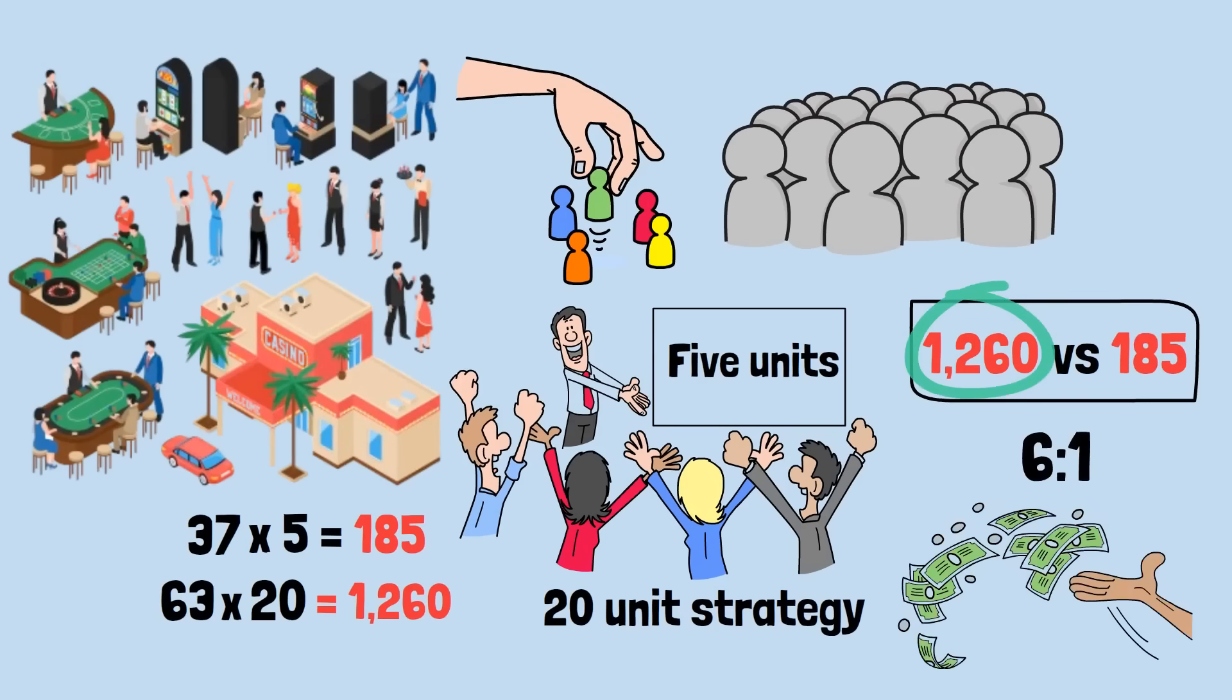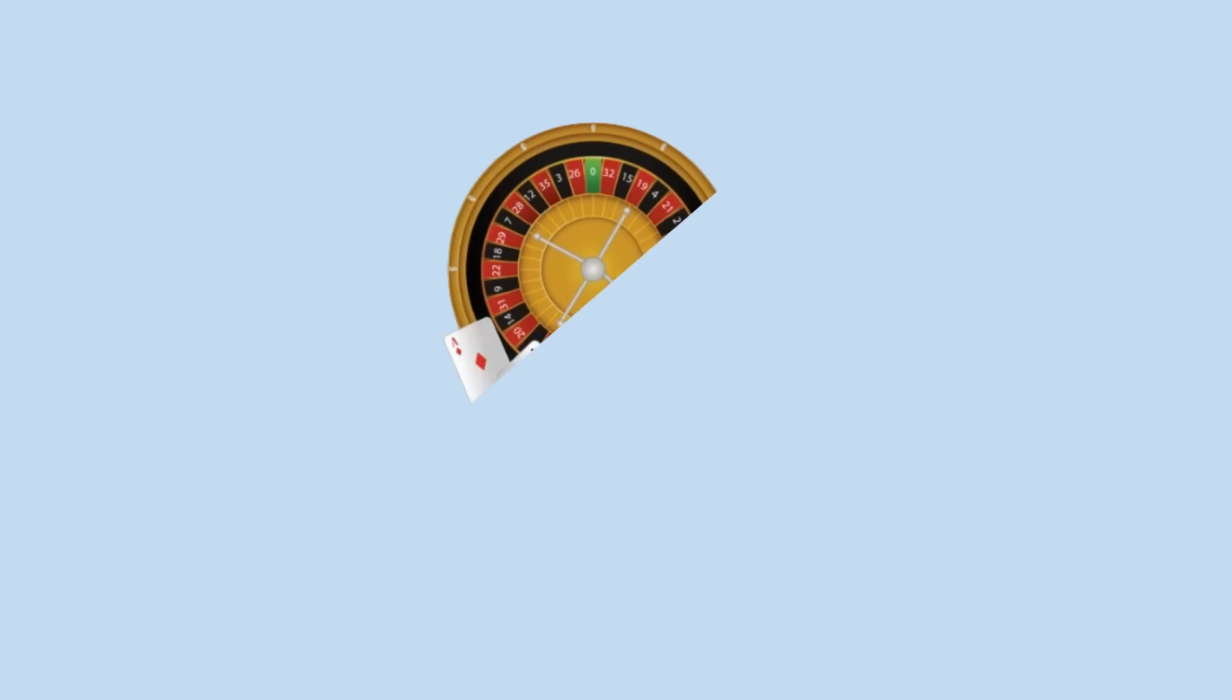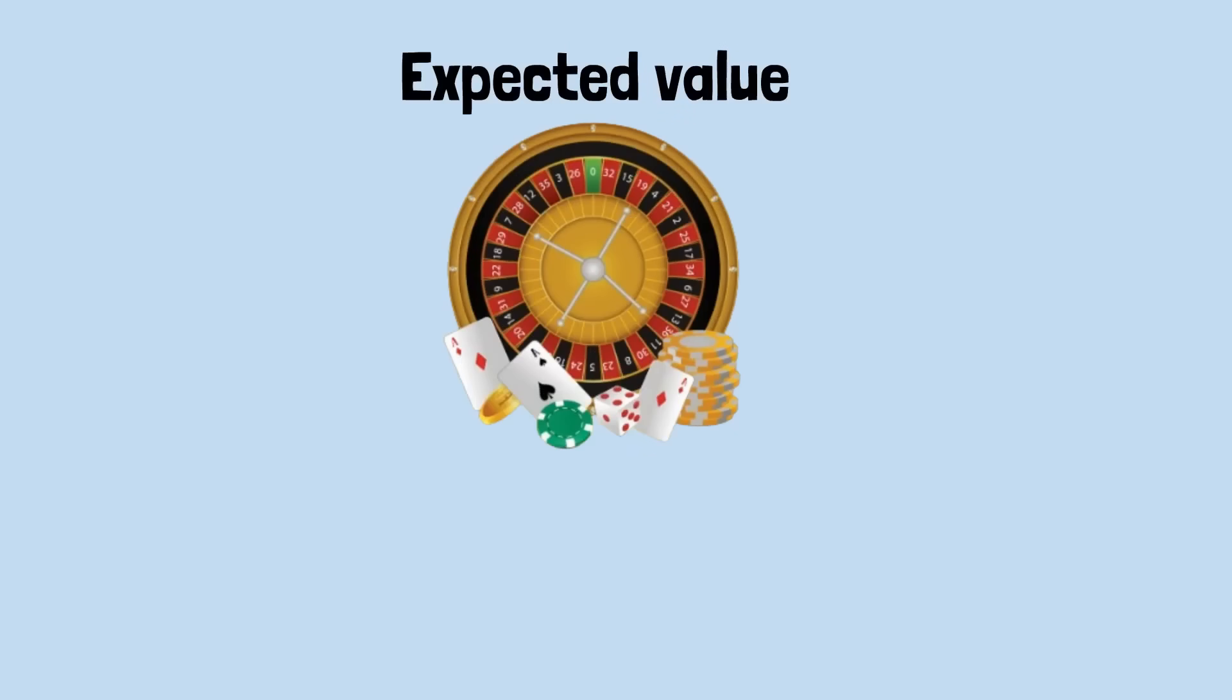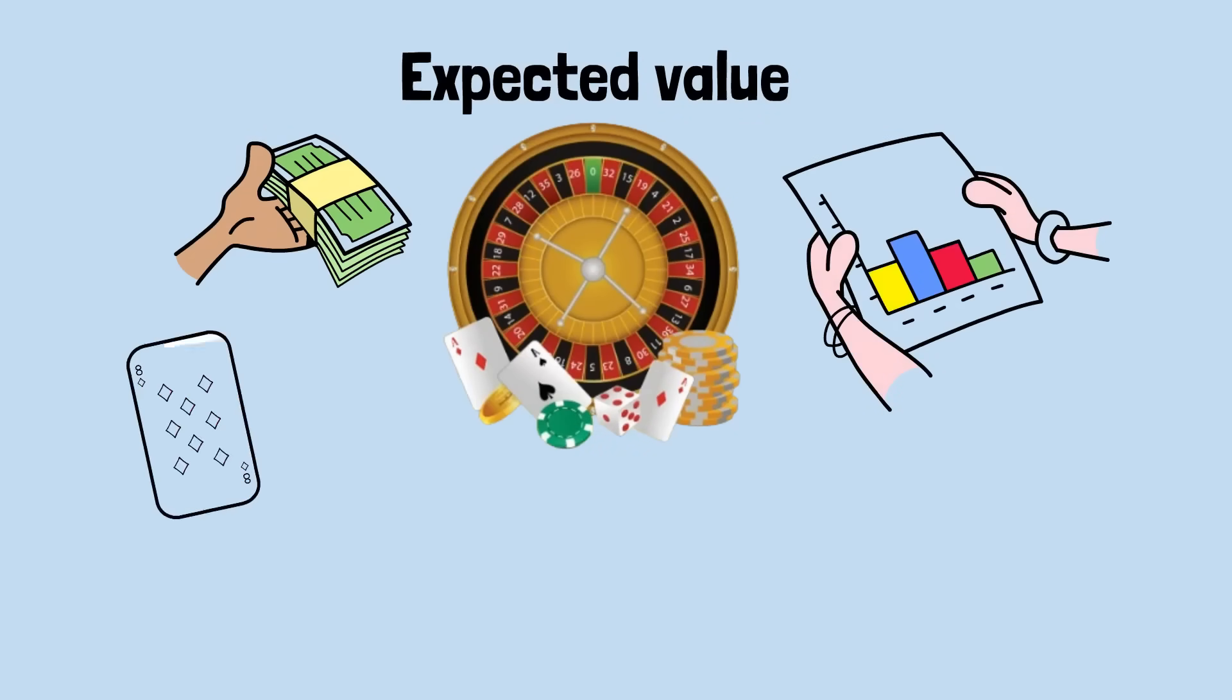This is how casinos make money: not by ensuring every player loses, but by ensuring that when players do lose, they lose much more than the winners win. Every casino game can be reduced to a fundamental mathematical concept: expected value. This represents the average amount you can expect to lose per bet over the long term, and it's built into every game's structure.